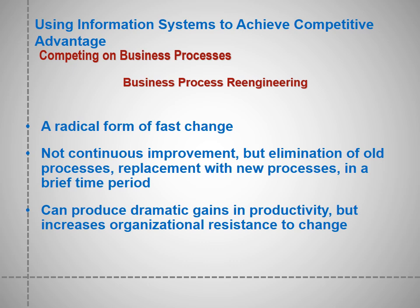Business process re-engineering is a more radical form of fast change — it's not continuous improvement but the elimination of old processes, replacing them with new ones in a brief time period. It can produce dramatic gains in productivity but increases organizational resistance to change. Nevertheless, it leads the company to move forward.